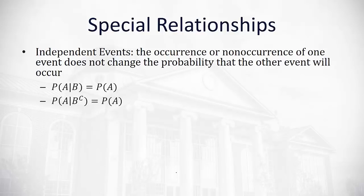The first special relationship is independent events. Two events are independent if one occurring — or not occurring — has absolutely no impact on the probability of the other. In other words, the probability of A given B is just the probability of A, and the probability of A given B's complement is also just the probability of A, because they don't influence each other.